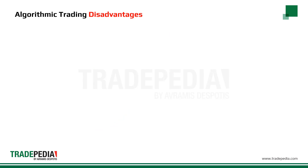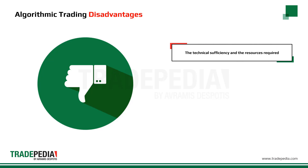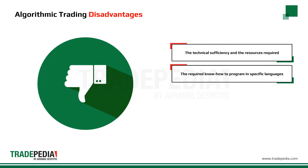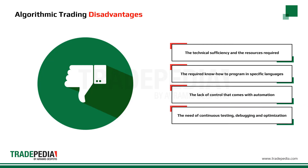Although there are many benefits to algorithmic trading, there are some downsides as well. One of the biggest disadvantages is the technical sufficiency and resources required, including the know-how to program in specific programming languages, which can take quite a while to learn. Another disadvantage is the lack of control that comes with automation — controlling the losses can go out of hand if the program runs in an undesired way. Last but not least, programs need to be continuously tested for errors and technical glitches, debugged, and optimized every now and then to sustain good performance.